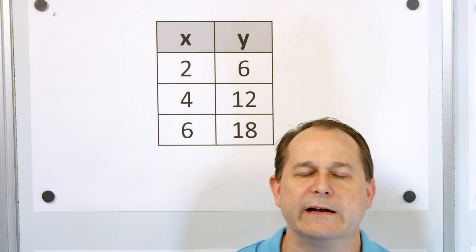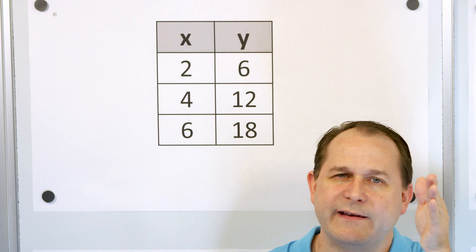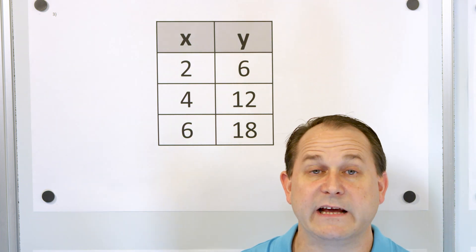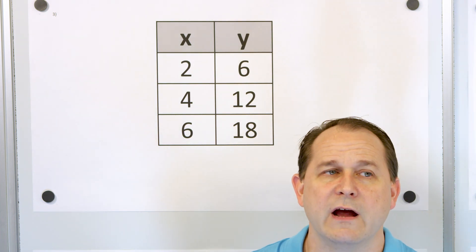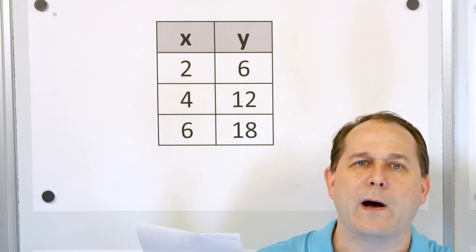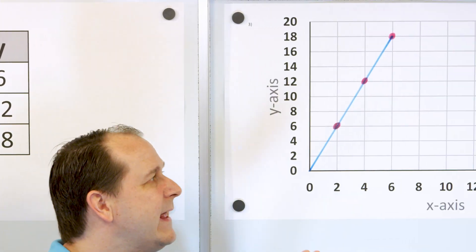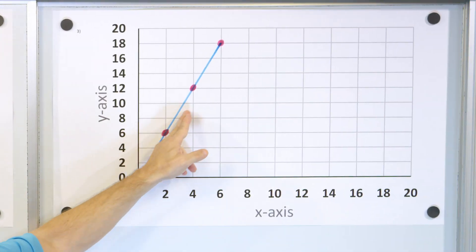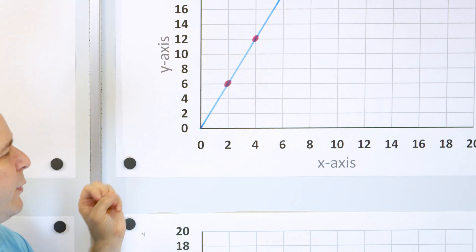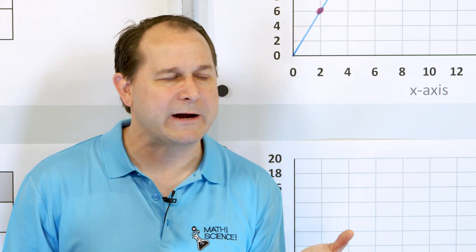In the last lesson we said: if you take Y divided by X for every XY pair and get the same answer, and those points intersect the origin, we call that a proportional relationship.